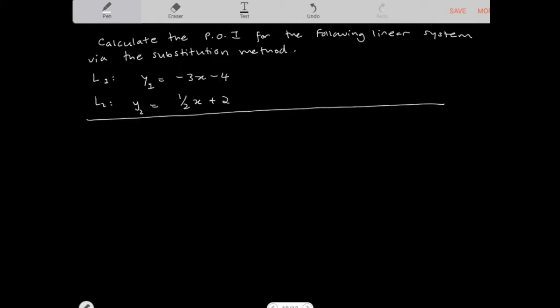Before I calculate for the point of intersection, I just want to verify that these two lines, in fact, do intersect. So slope of line 1 is equal to negative 3 because we're looking at it as y equals mx plus b and m here is the slope. And the slope of line 2 here is 1 half.